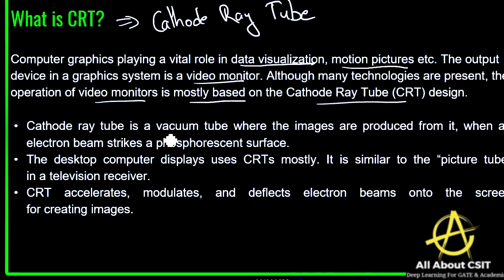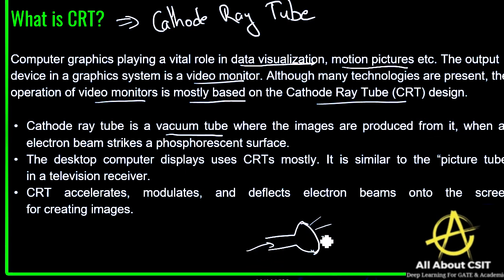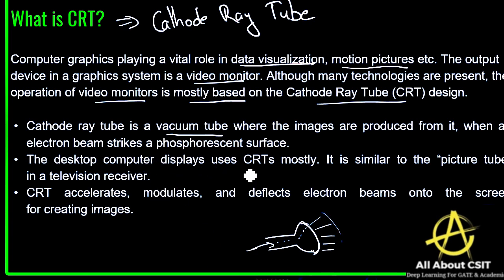The cathode ray tube is a vacuum tube — it looks like a vacuum tube — where images are produced and displayed on the monitor. Images are produced when an electron beam strikes a phosphorescent surface. Whenever the electron beams touch this phosphor surface, an image is displayed on the screen.